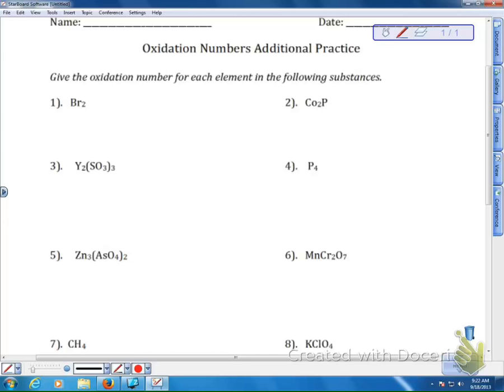Number one, we have Br₂. Anytime you have a single element, you can almost assume that element is in its natural state. So don't stress when you see the subscripts for an element. Most of the time they're not trying to trick you. Any element in its natural state is going to have an oxidation number of zero. Electrons are shared equally and both atoms are exactly the same.